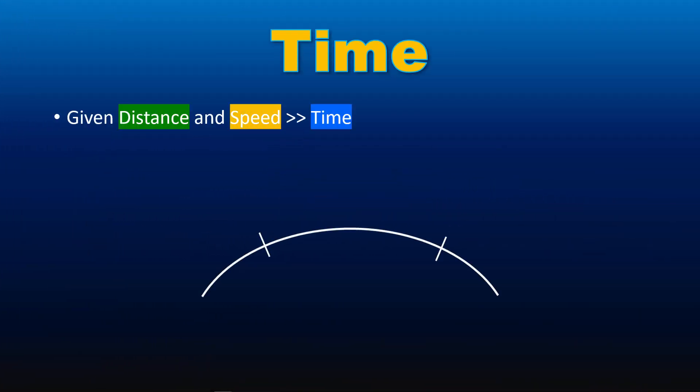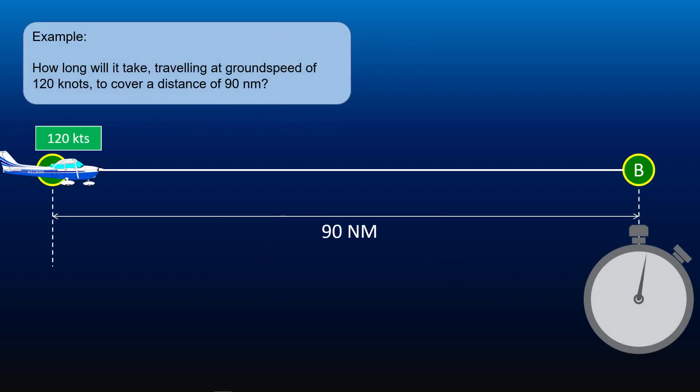If we were given distance and speed, we could calculate the time taken to travel that distance by setting the 60 index on the inner scale against the speed on the outer scale. Locate the distance on the outer scale, then read the elapsed time on the inner scale against the distance. For example, how long will it take traveling at ground speed of 120 knots to cover a distance of 90 nautical miles?